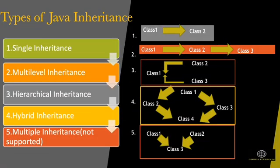We can see different inheritance types for code reusability. The first type is single inheritance, where a class extends just one other class. Multi-level inheritance refers to a mechanism in which one can inherit from a derived class, thereby making that derived class the base class for the new class.